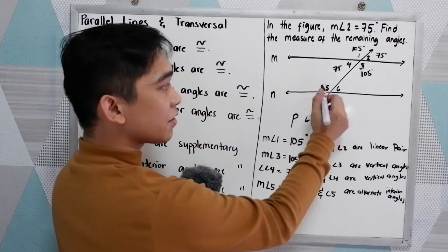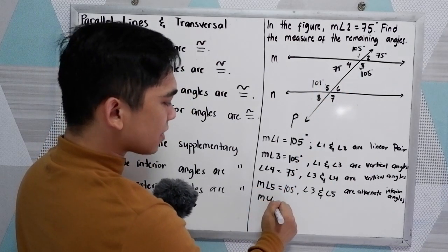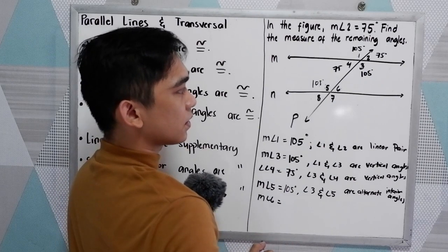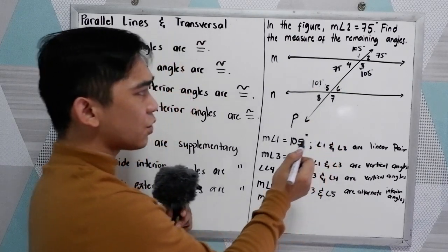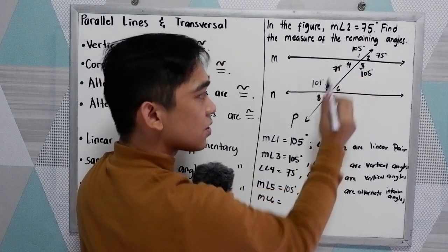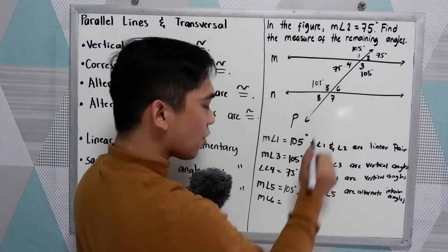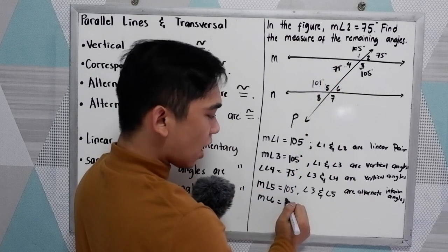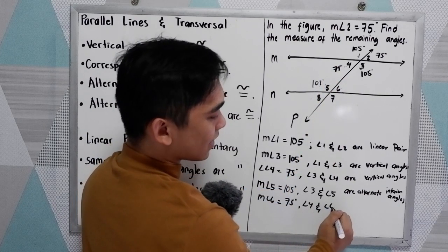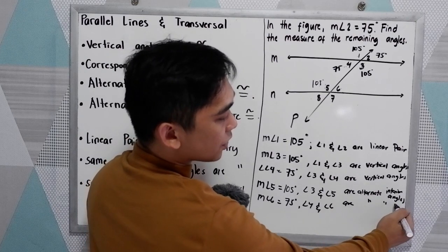If angle 5 is 105 degrees, then measure of angle 6: we can use angles 4 and 6 as alternate interior angles. Angle 4 and angle 6 are congruent. Since angle 4 is 75 degrees, angle 6 is also 75 degrees. Reason: angle 4 and angle 6 are alternate interior angles.